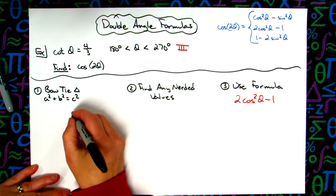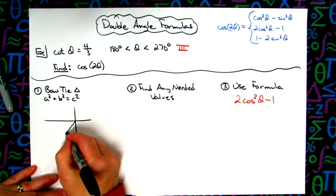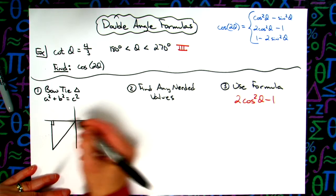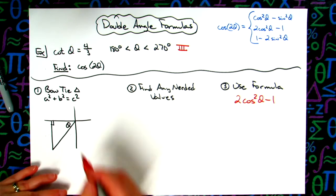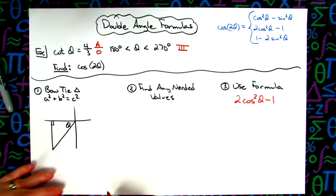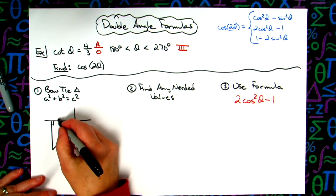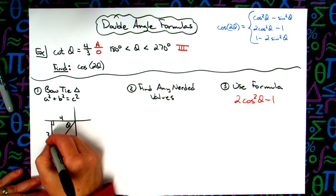So I'm going to come over here, I'm going to draw that bowtie triangle in quadrant three. So there's my bowtie triangle with θ being right there. Now we know cotangent is adjacent over opposite. So my adjacent side here would be the four, and my opposite side here would be the three.